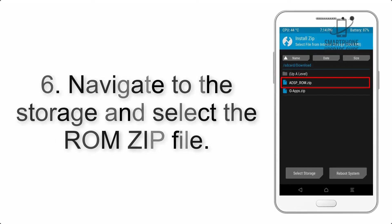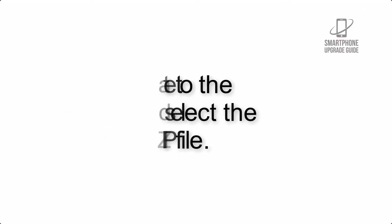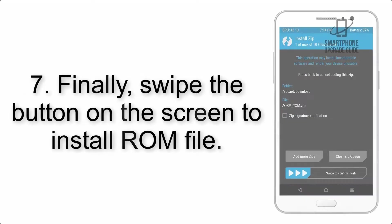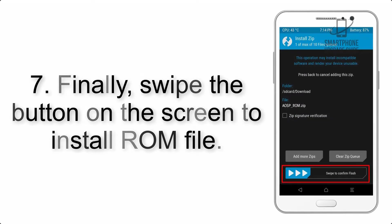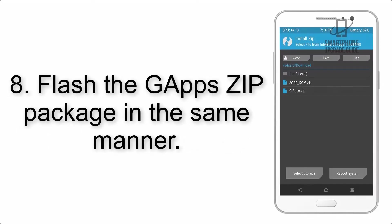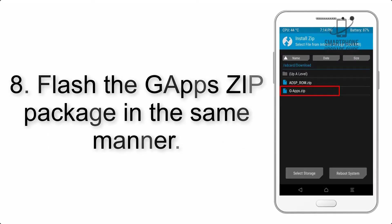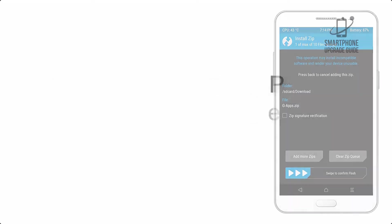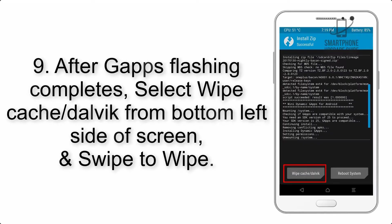Step 5: Go back to the recovery main screen and tap on the Install button. Step 6: Navigate to the storage and select the ROM zip file. Step 7: Finally, swipe the button on the screen to install the ROM file.